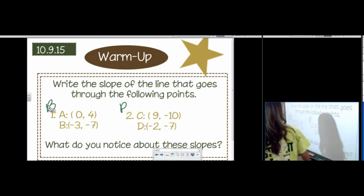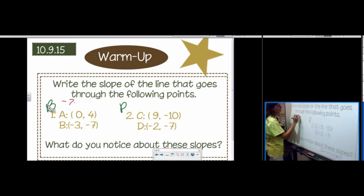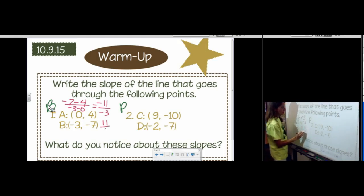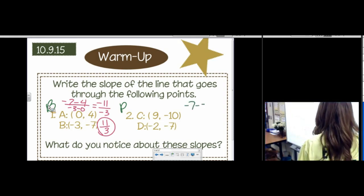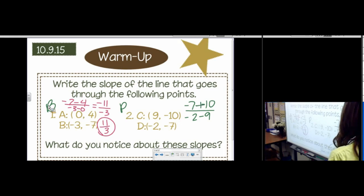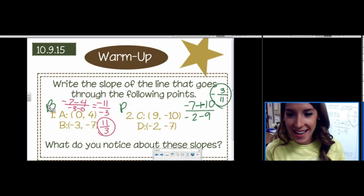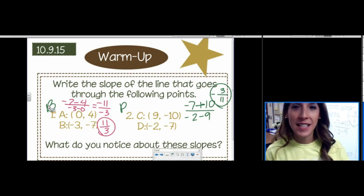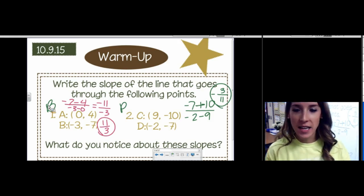All right, so remember from yesterday, slope is delta y over delta x. So in this one, we have negative 11 over negative 3, and so our slope is 11 thirds. Okay, this one, delta y over delta x, the numerator is 3, and the denominator is negative 11. So the answers are: for number 1, it was 11 thirds, and for number 2, it's negative 3 elevenths. And then it says, what do you notice about these slopes? Because this is actually what our whole lesson is today. It is in the warm-up.